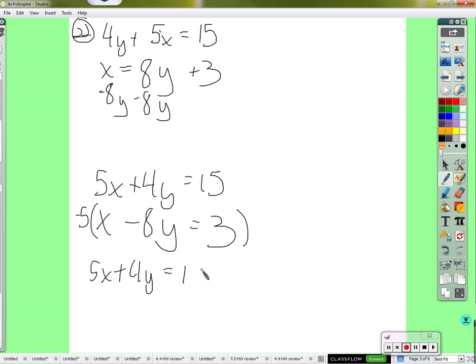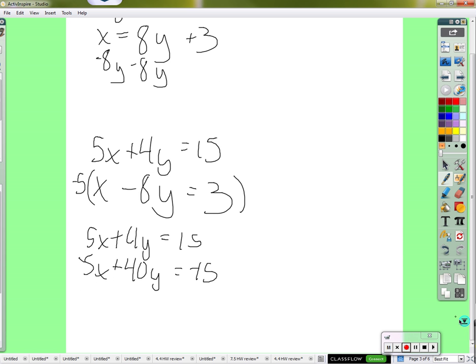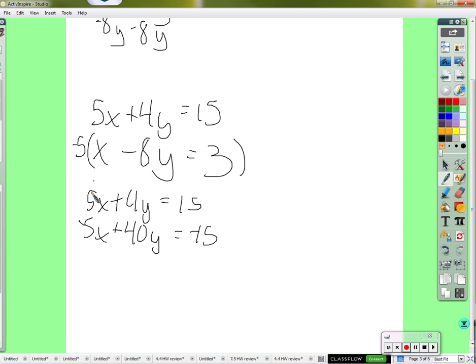So we have 5x plus 4y. It's just the top equation being rewritten. Now, negative 5 times x is negative 5x. And these are going to cancel out. So negative 5 times negative 8y is positive 40y. Negative 5 times 3 is negative 15. 5x minus 5x is 0. So 4y plus 40y is 44y. 15 minus 15 is 0. So we divide it by 44. Y is 0.